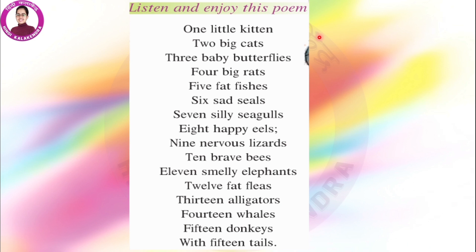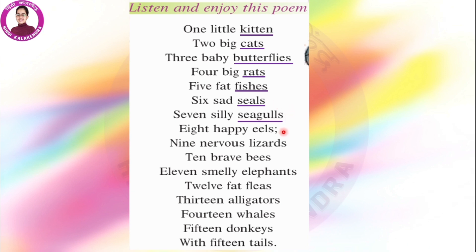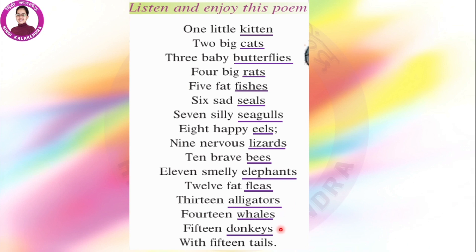Let's underline the names of the animals: kitten, cats, butterflies, rats, fishes, seals, seagulls, eels, lizards, bees, elephants, fleas, alligators, whales and donkeys.